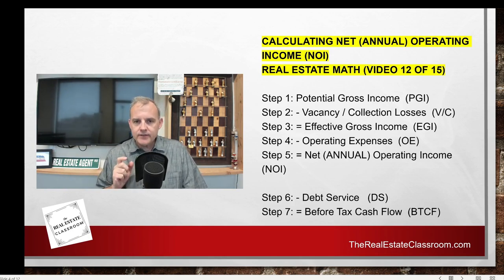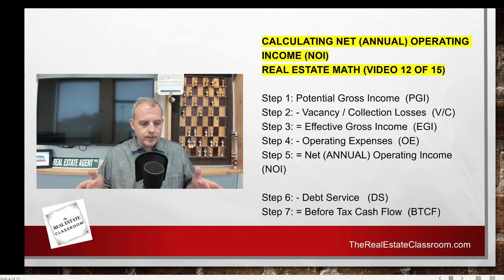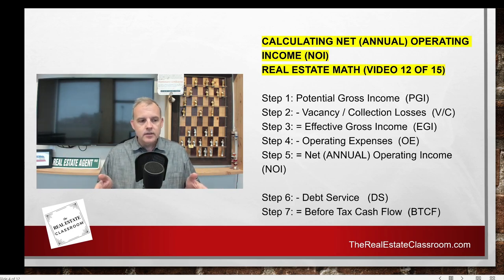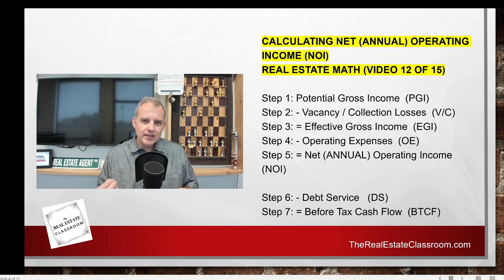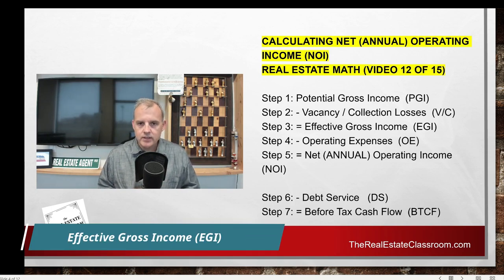Then we have to subtract the actual vacancy losses or collection losses. If we have a 50-unit apartment community and 10 of those units weren't rented, that's a collection loss — we weren't collecting any revenue. We take the potential gross income and subtract the vacancy loss, which gives us what's called the effective gross income.